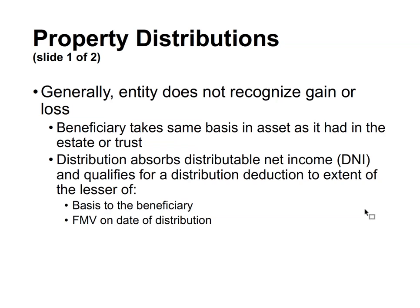Regarding property distributions, generally an entity does not have to recognize gain or loss. This is similar to corporations, except that in a C corporation a property distribution requires recognizing gain (though not loss). Here, generally no gain or loss recognition is required, but the beneficiary takes the same basis in the asset as it had in the estate or trust. The distribution absorbs the DNI (distributable net income) and qualifies for a distribution deduction to the extent of the lesser of the beneficiary's basis or fair market value.